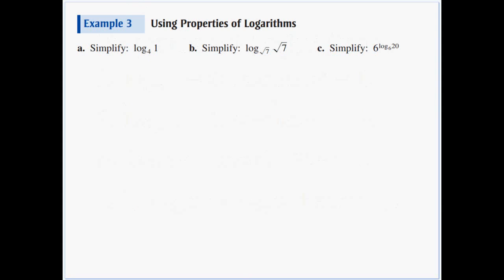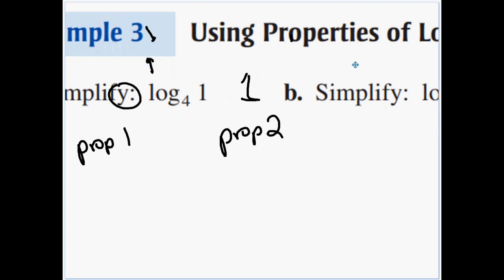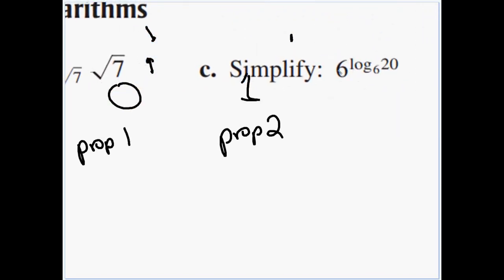Let's see a couple of these in action. Using the properties, we got log base 4 of 1. I don't care what that base is; as long as that's a one, the answer is zero. That was property one. Here we got log base root 7 of root 7. When these are the same, the answer is just going to be the exponent up here. Since there is none, there's an implied one, so it equals one. That was property two. Let's take a peek at this last one. Just like squares and square roots cancel, we have a log base 6, that's the exponent above the same base 6. Six log base 6 is going to cancel, and the final answer is just going to be that 20. That would be the inverse property.